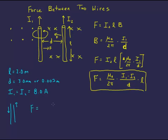We're going to have mu naught over 2π, which is 2 times 10 to the negative 7. And the two currents, we got 8 amps and 8 amps. So let's just call that 8 amps squared. The distance between them, 0.003 meters. And the length is 2 meters. And if we plug that all into our calculator, we're going to get 8.5 times 10 to the negative 3 newtons.